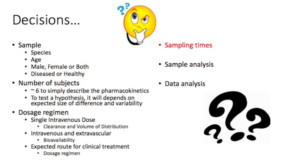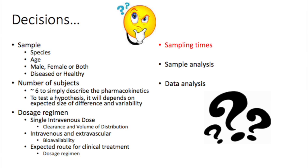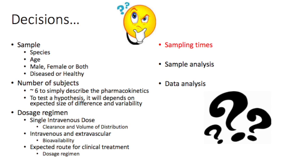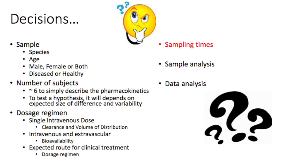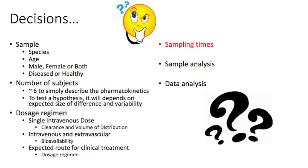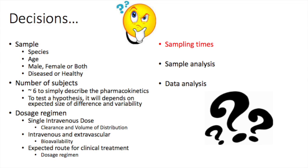Population pharmacokinetics is the subject of a whole other course, but keep in mind that it is an approach that can be used to look at factors that cause variation in the pharmacokinetics by pooling samples from many individuals without having to take lots of samples from one individual.